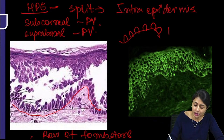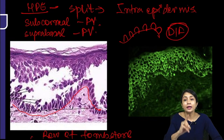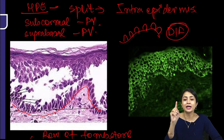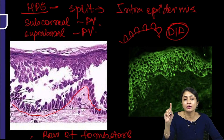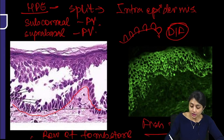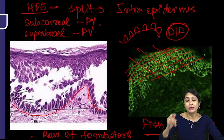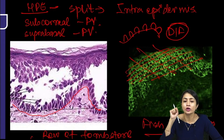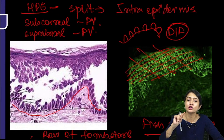Direct immunofluorescence is the gold standard test to diagnose these disorders. The gold standard test to diagnose intra-epidermal or sub-epidermal disorders is DIF. In pemphigus group of disorders, you see a fish net pattern, which is seen in the epidermis. Because desmoglein 1 and desmoglein 3 are present in the intercellular space, the antigen-antibody complex is formed there, so DIF shows a fish net pattern.